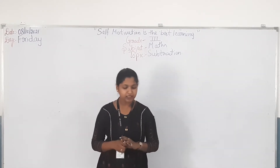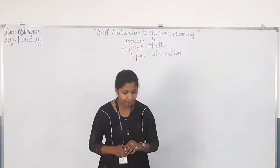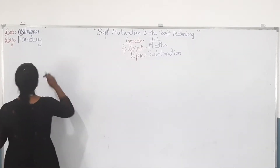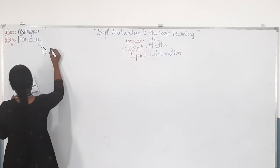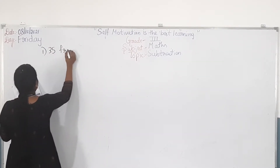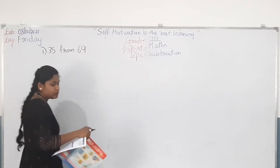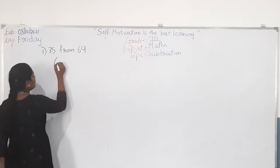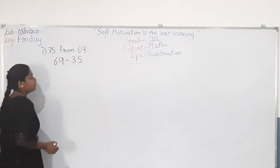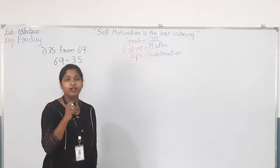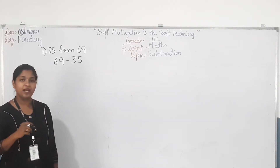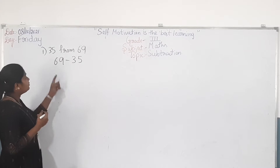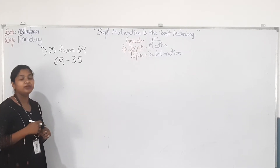Now I will teach you how to subtract two-digit numbers mentally without regrouping. The first question is 35 from 69. Will you subtract this mentally? So which is the largest number? 69 minus 35. While writing, we are subtracting starting from the ones digit. Similarly, to subtract mentally, you have to subtract the first number in the ones place.